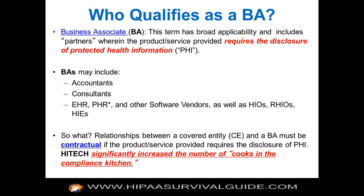You can now have subcontractors of subcontractors all the way down the line. Who may be included as BAs? Examples include accountants, consultants, lawyers, EHR vendors, PHR vendors under certain scenarios, software vendors, health information organizations, regional health information organizations, and health information exchanges. These are all examples of business associates.